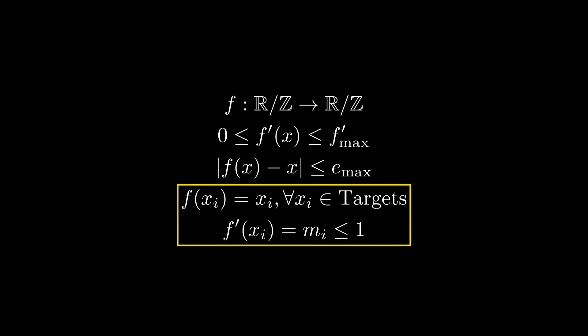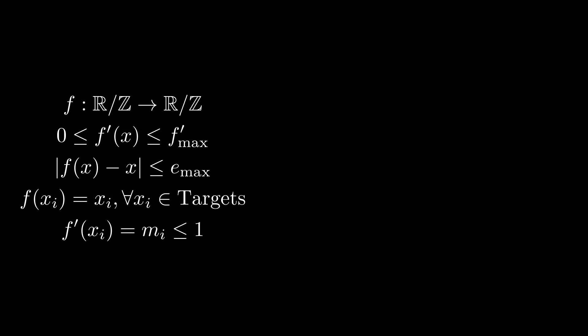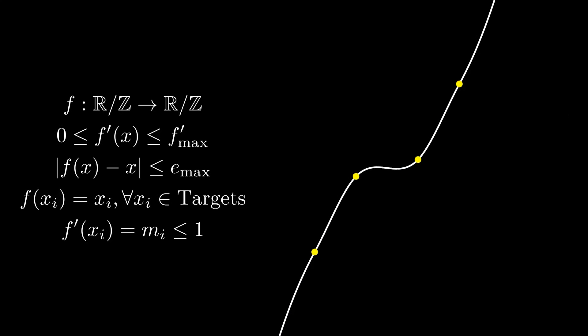For example, these last two constraints look a lot like specifying function values and derivatives at a set of points, which is a problem solvable by cubic spline interpolation. However, we'd quickly realize that cubic splines don't guarantee monotonicity, which violates our second constraint. A quick search leads us to monotone cubic interpolation, which handily solves our problem.